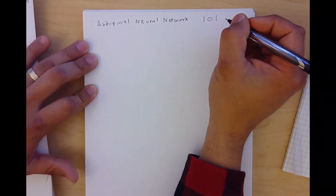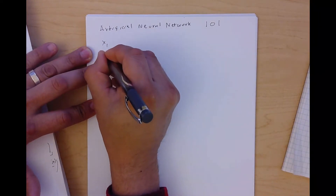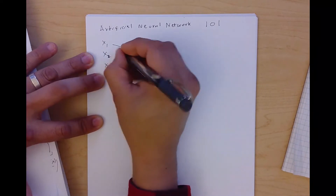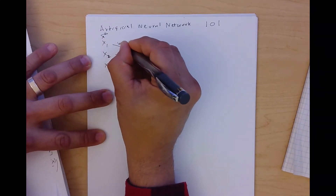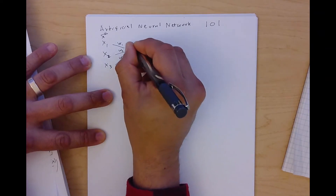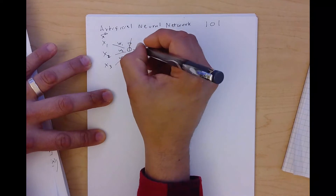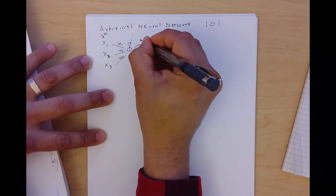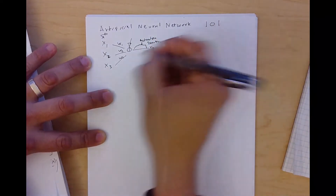Let's start from the most basic neural network. Imagine we have three entries — basically a vector — and we have also the weights: w1, w2, w3. We have two parts here: one part is the generalized linear part, and the second part is the activation function.